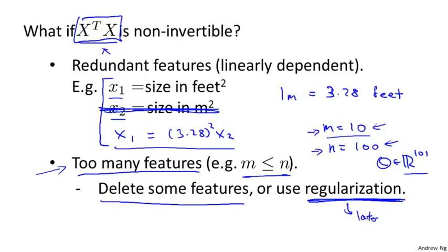So that's it for the normal equation and what it means if the matrix X transpose X is non-invertible. But this is a problem that you should run into pretty rarely. And if you just implement it in Octave using pinv, using the pinv function.